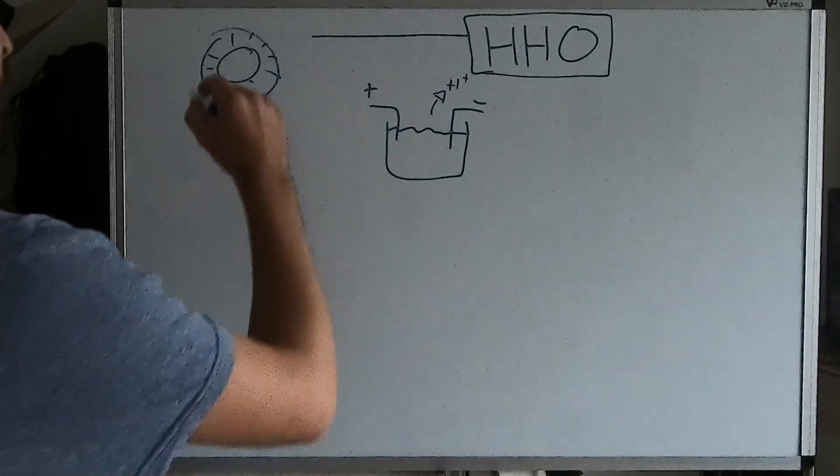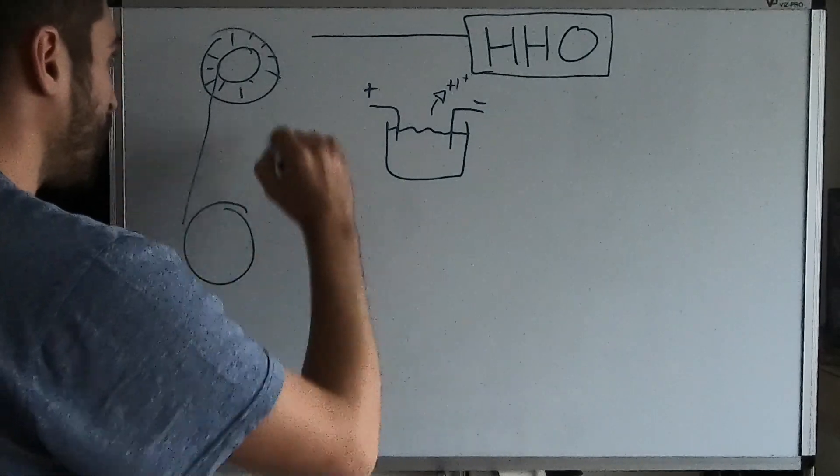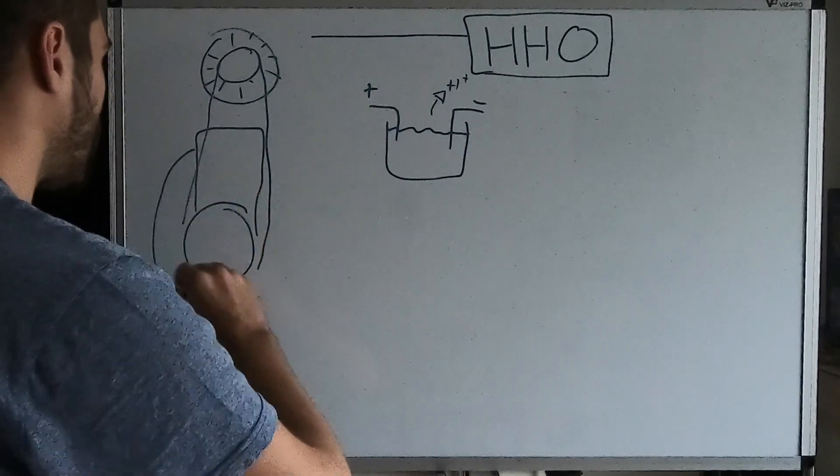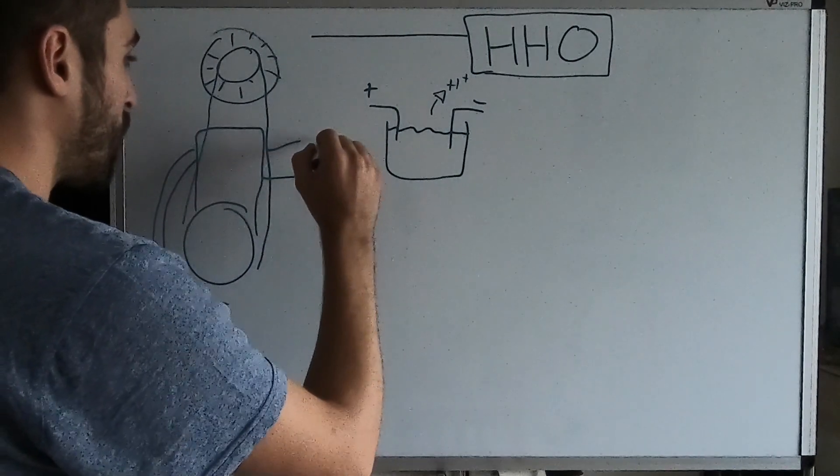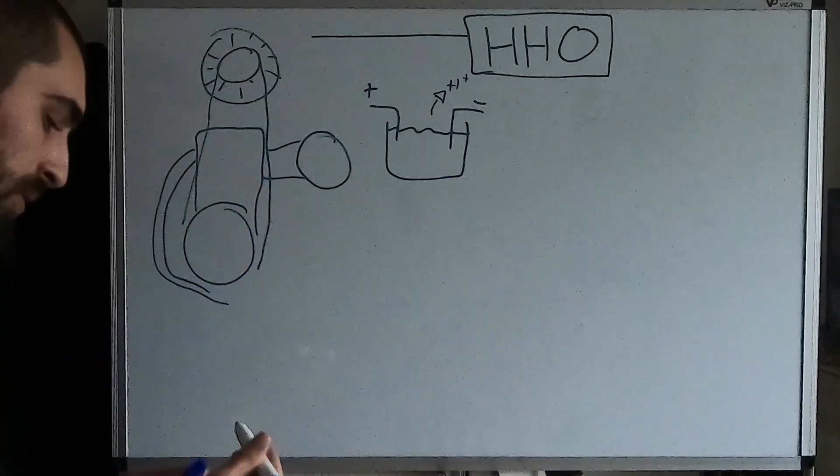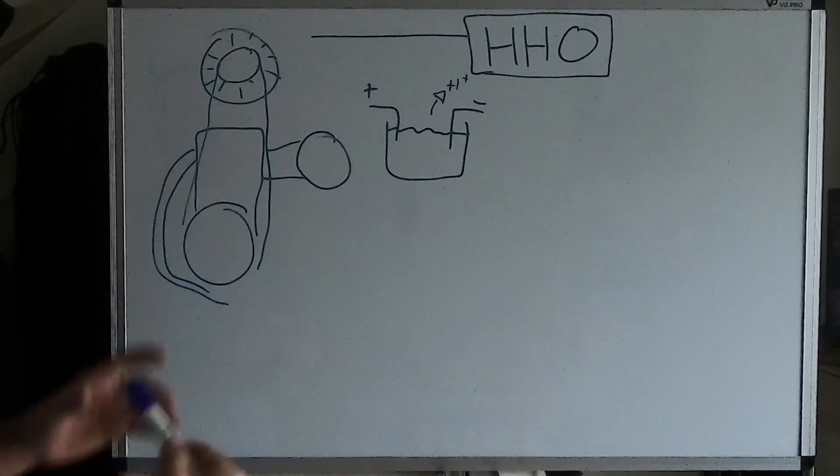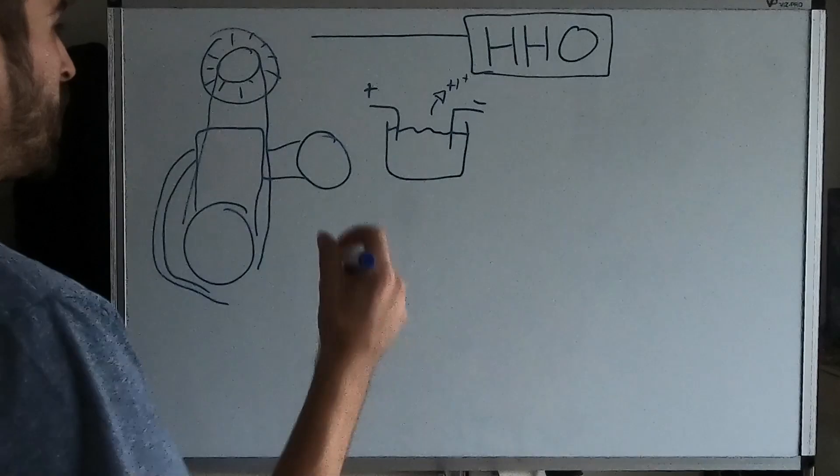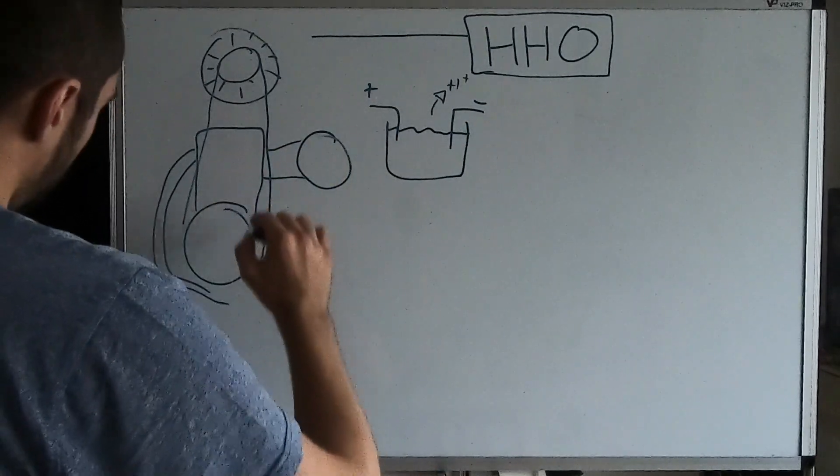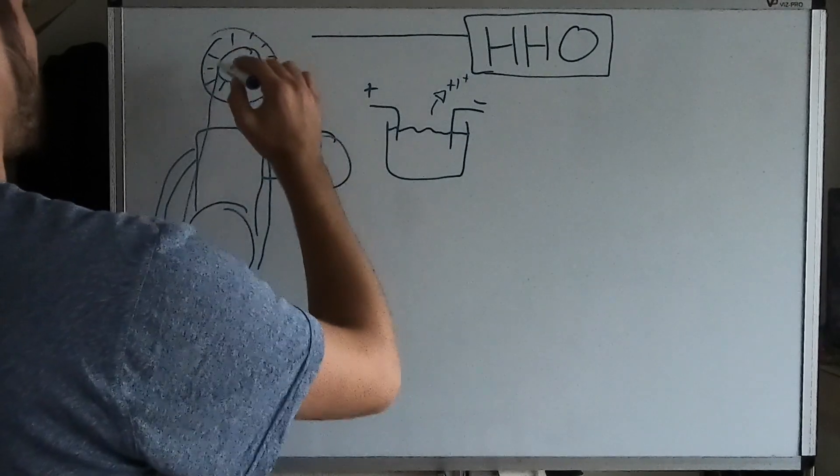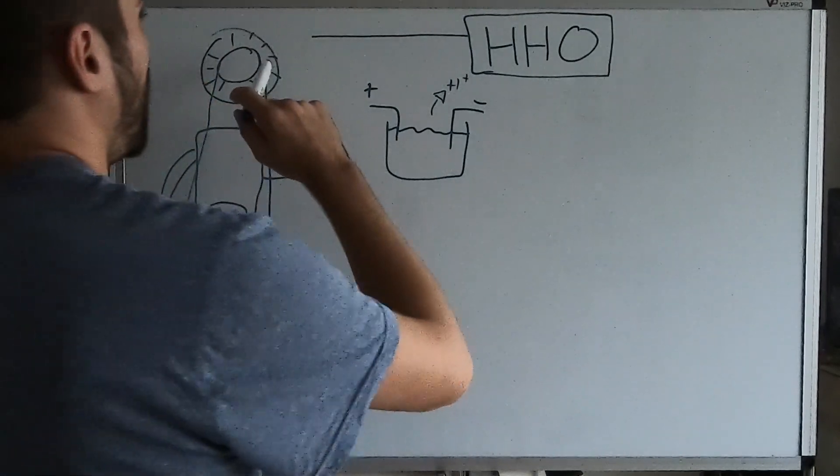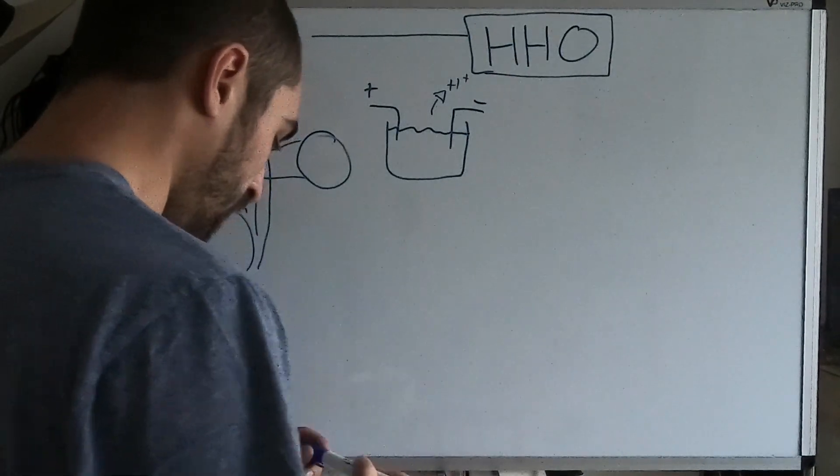And that will power it, yeah. But the alternator is also connected to the engine, specifically to the crank pulley. So the problem with these HHO generators is that you're creating hydrogen to feed to the engine, which in turn spins the crank, which turns the alternator.